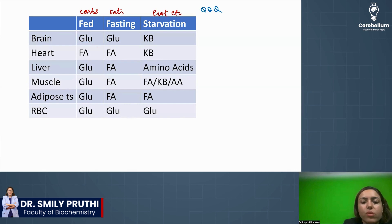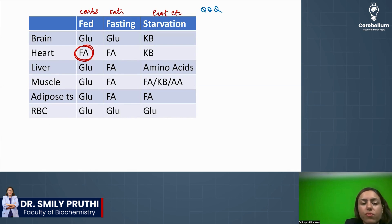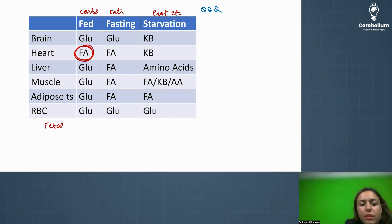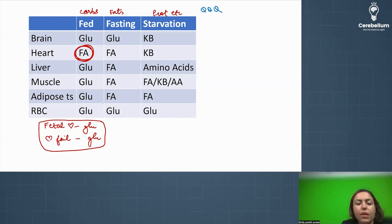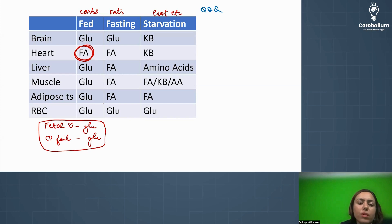There is one exception in the fed state: the heart uses fatty acid even in the fed state. However, the fetal heart uses glucose. In heart failure, the fuel is again glucose. As soon as birth occurs — even a one-day-old child — the heart switches to fatty acid. Only in the fetus and in heart failure is glucose used.